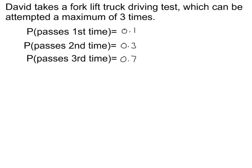David takes a forklift truck driving test which can be attempted a maximum of 3 times. The probability that he passes the first time is 0.1. On his second test he's improved, and the probability that he passes is 0.3. With more practice he improves even further, so the probability that he passes the third time is 0.7. He is not allowed to take the test after the third time — there's a maximum of 3 attempts.